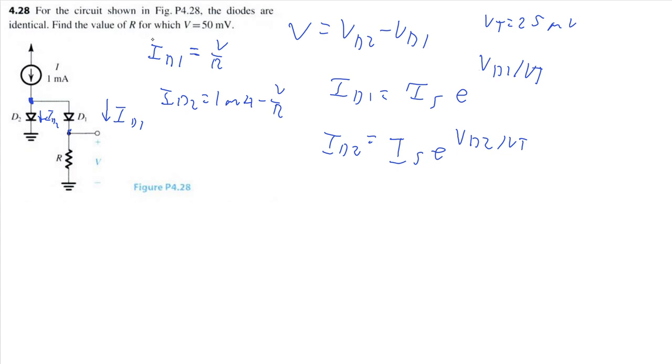Ultimately, we need to find a value for R, given that V equals 50 millivolts. How can we make an expression for V? We can derive an expression of V with the two voltage diode equations, if we divide the expression for ID2 with the expression for ID1.